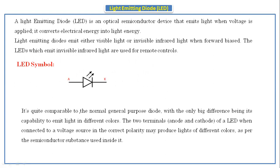It is quite comparable to the normal general purpose diode, with the only big difference being its capability to emit light in different colors. It is the same as a PN junction diode but with the extra capability of emitting light in different colors. The two terminals, anode and cathode, when connected to a voltage source in the correct polarity, produce lights of different colors as per the semiconductor substance used.